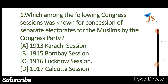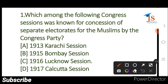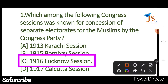Which among the following Congress sessions was known for the concession of separate electorates for the Muslims by the Congress party? The answer is 1916 — the Lucknow session. It is 1916, and it relates to separate electorates.